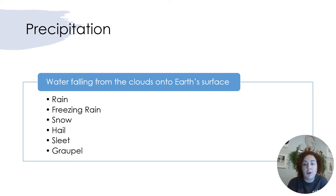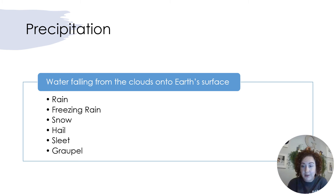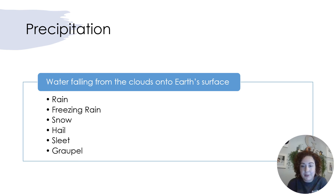Precipitation overall is water falling from the clouds onto Earth's surface. But depending on temperatures and conditions, our water falling can come as rain, but it can also come down as freezing rain — super cold rain that as soon as it hits our surface turns into ice — snow, which we have or have not experienced a lot of this year, hail, sleet, and then something really fun called graupel, which has to have the perfect weather conditions in order to form. So let's talk about each of these different types of precipitation.